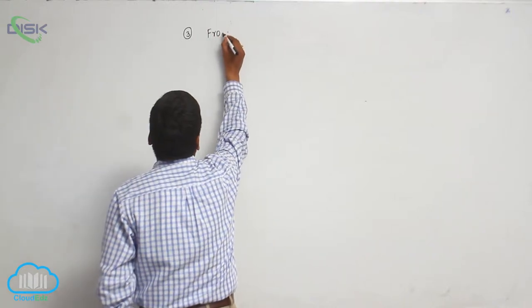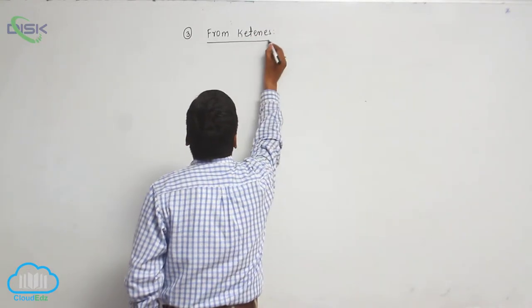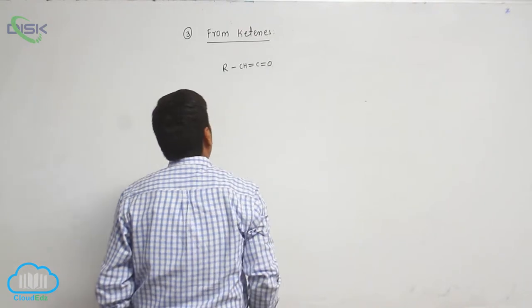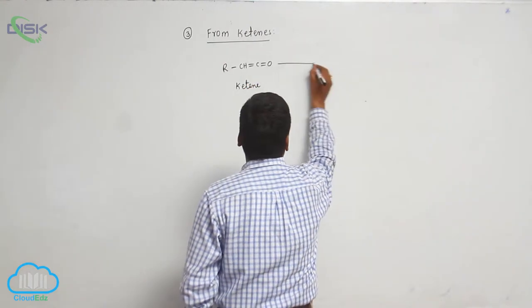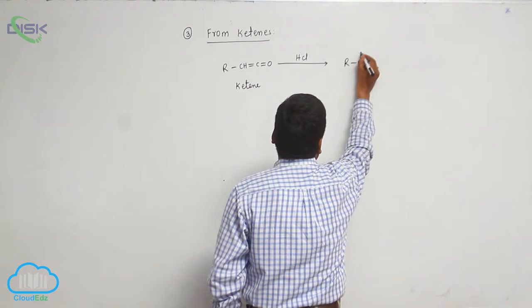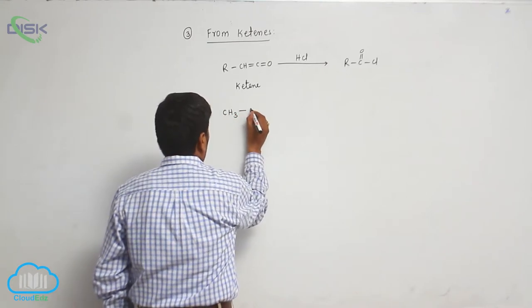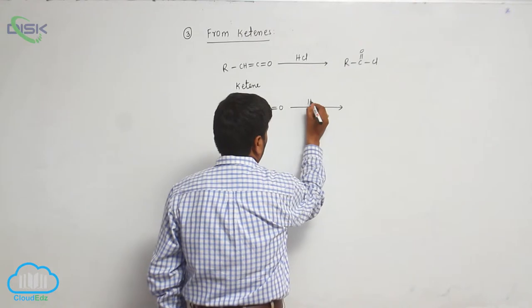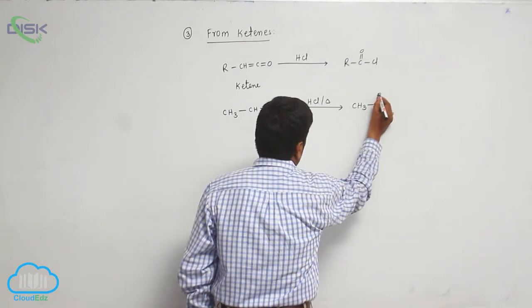This is known as Ketene, with a CH=C=O double bond structure. Ketene reacts with hydrochloric acid — CH=C=O reacting with HCl — to form acetyl chloride.